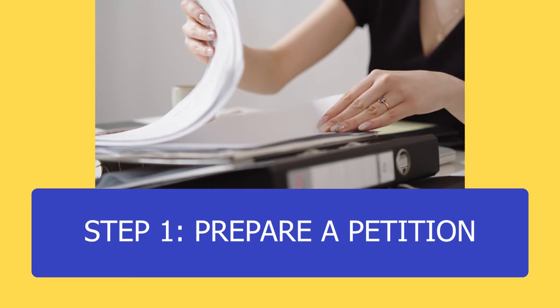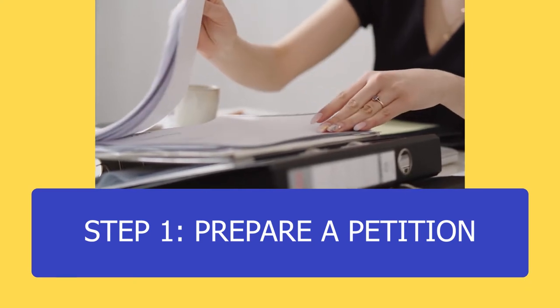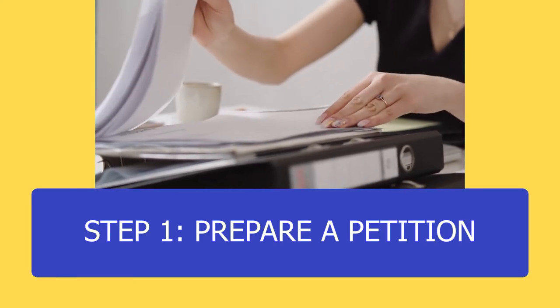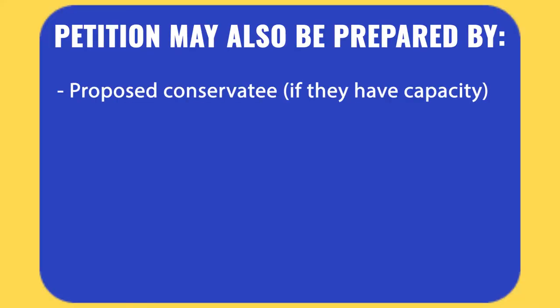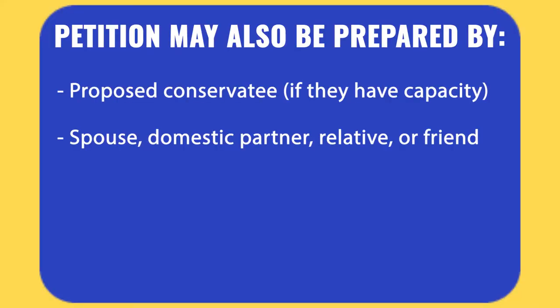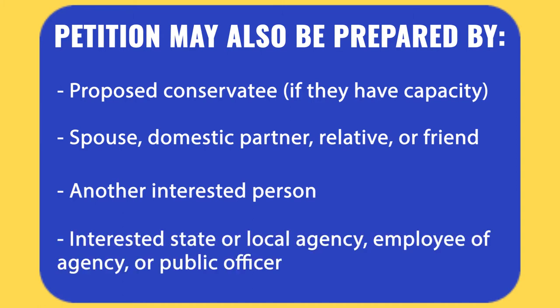Step 1: Prepare a Petition. To begin the process of seeking a conservatorship, a petition must be drafted. The petition is usually prepared by the proposed conservator, but also may be prepared by the proposed conservatee if they have the requisite capacity, a spouse, domestic partner, relative, or friend of the proposed conservatee, another interested person, an interested state or local agency, employee of the agency, or public officer.